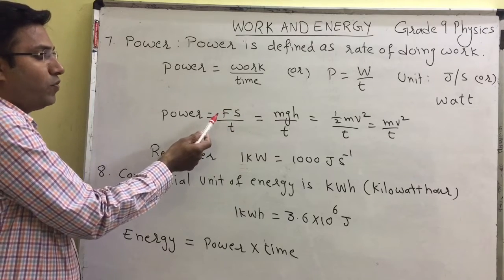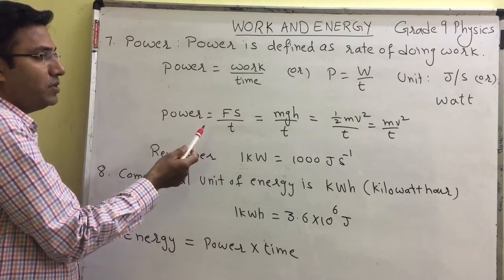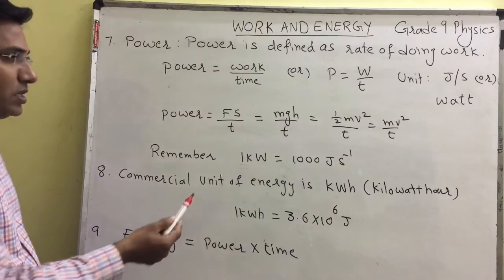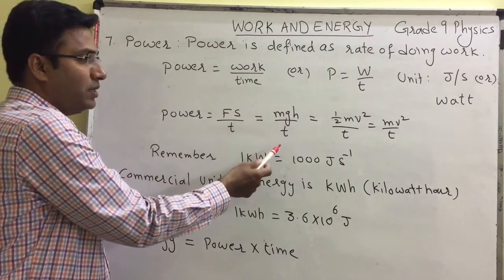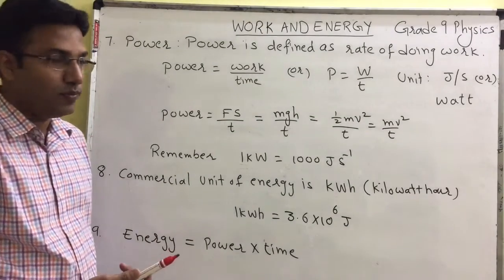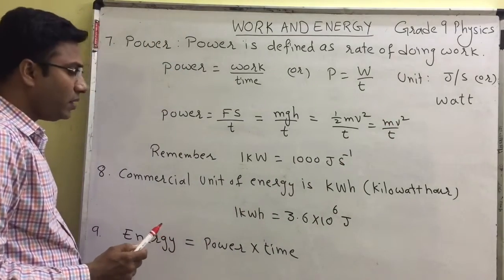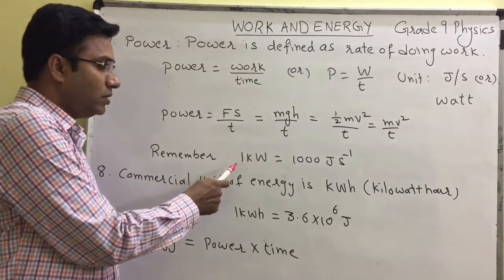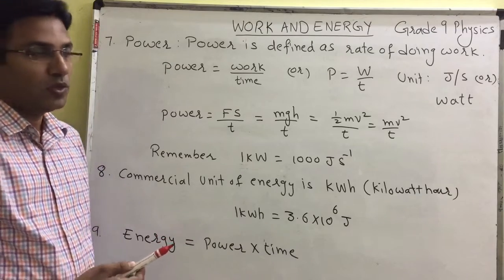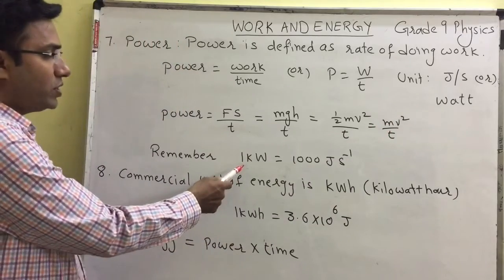As we know, the formula of power is work by time, and the work formula is F×S. So if force and displacement are given in the problem, we use the formula of power as F×S divided by T. Sometimes we have to find power when potential energy or mass and height are given; in that case the formula of power is mgh by T. Sometimes mass and velocity will be given; in that case the formula of power is mv² by T, where T is time. Remember that 1 kW is equal to 1000 joules per second.